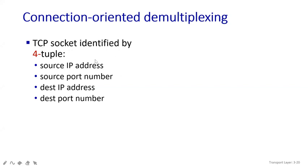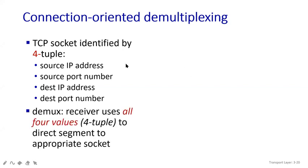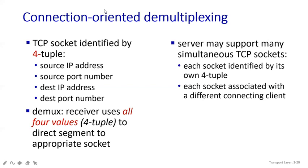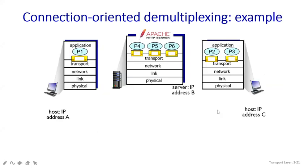TCP is identified by four tuples. In UDP we used only two things — source port number and destination port number. But in TCP, we use four things: source IP address, source port number, destination IP address, and destination port number. All four values are sent directly to the appropriate socket. The server may support many simultaneous TCP circuits, and each socket is identified by its own four-tuple, with each socket associated with a different connecting client.